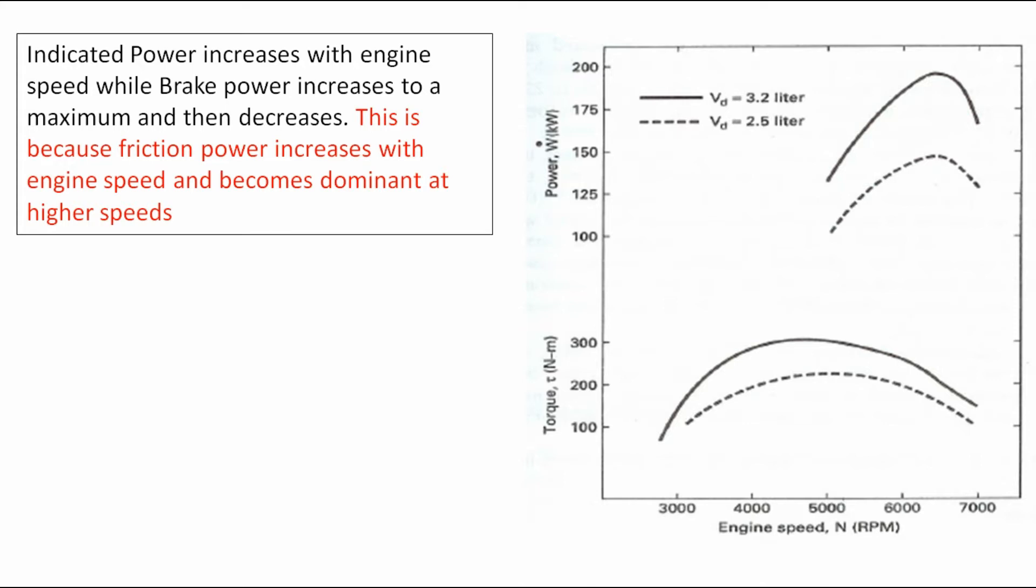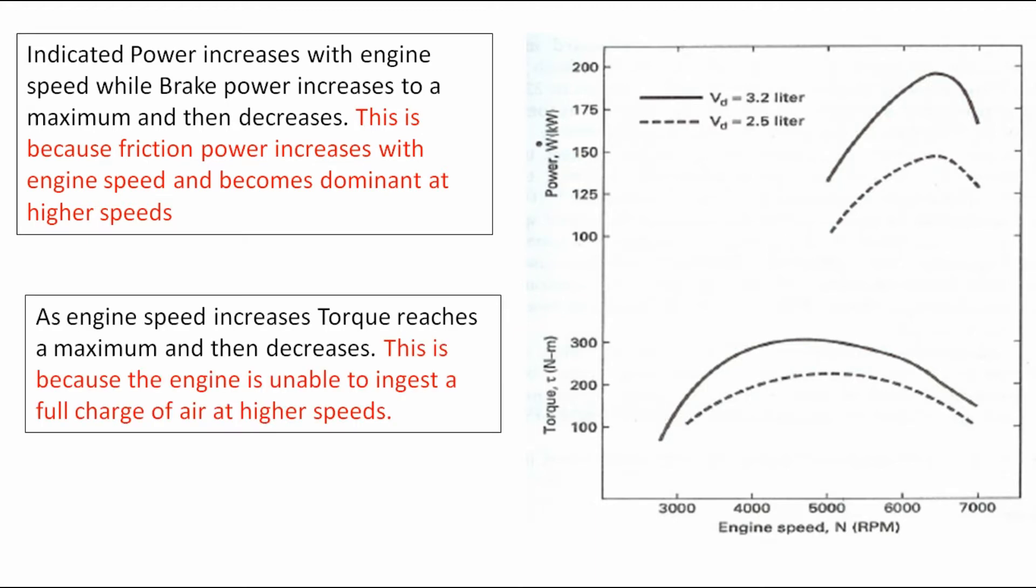Indicated power increases with engine speed while brake power increases to a maximum and then decreases. This is because friction power increases with engine speed and becomes dominant at higher speeds. As engine speed increases, torque reaches a maximum and then decreases. This is because engine is unable to ingest a full charge of air at higher speeds.